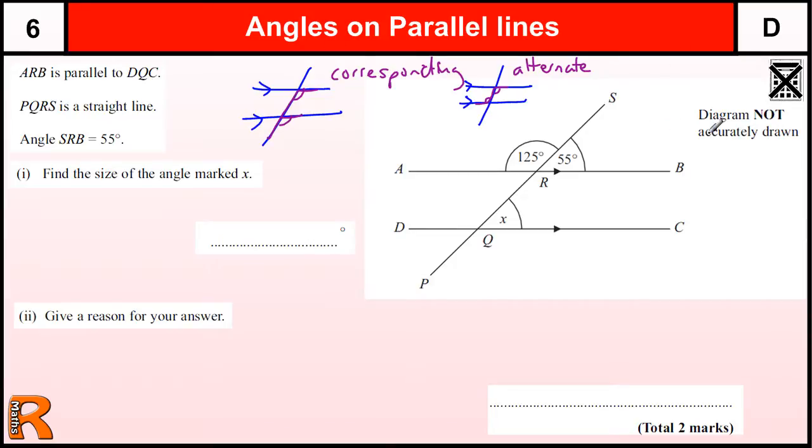And the third one, which is probably the least used, is the one where we have angles on the inside in a C shape. That's called interior angles.